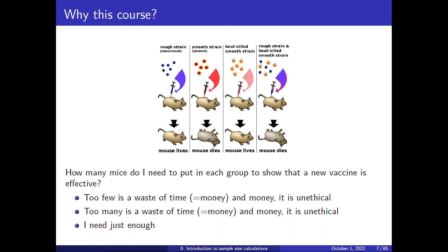The problem of using too few animals is that the experiment has too little statistical power, which we will learn about later. Basically, when you go to analyze the data, you can never be sure that there is a significant difference between the vaccinated and non-vaccinated group. Using too many animals is also a waste of time and money — and again, unethical. If you design an experiment with too many animals, you will be able to see every minor difference between groups, but you could have shown the same effect with many fewer animals.